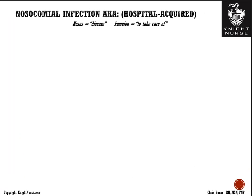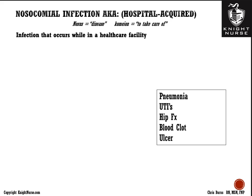Nosocomial infections are infections acquired in healthcare settings. These can include pneumonias, urinary tract infections, blood clots (DVTs), falls resulting in hip fractures, and gastric ulcers. Importantly, most insurance companies will not reimburse healthcare facilities for nosocomial infections — the cost of care, including ICU care, falls on the facility because the infection is considered a preventable complication.